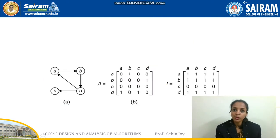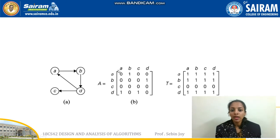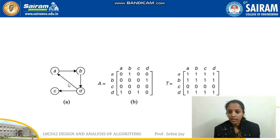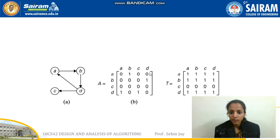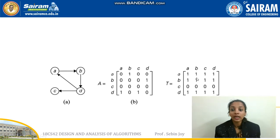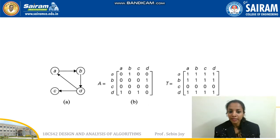We understand this better with an example. A directed graph and its adjacency matrix are given. When we apply Warshall's algorithm, we get the transitive closure. For instance, there is a path from a to b and b to d, but the adjacency matrix shows a to d equals 0 because there is no direct directed edge. However, the transitive closure includes indirect paths through intermediate vertices, so a to d equals 1 because we can go from a to b to d.